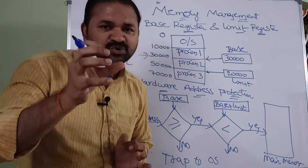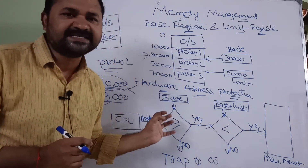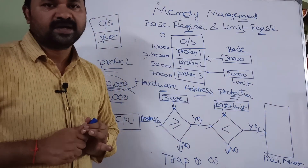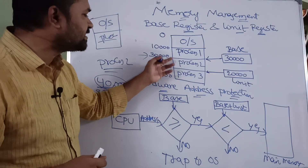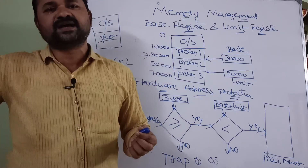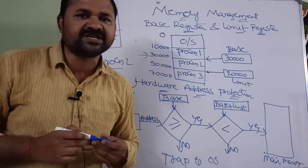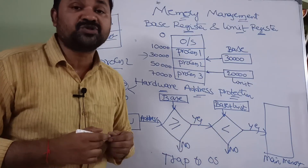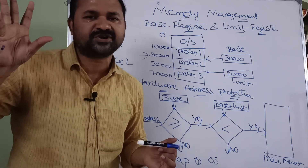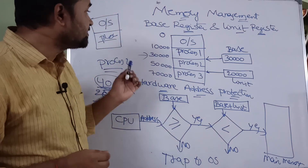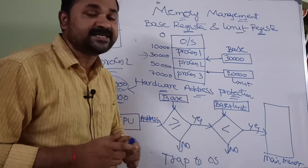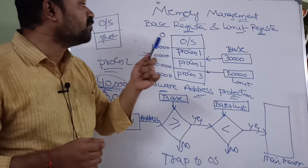Hardware ensures that the CPU is only accessing valid instructions from main memory. If the CPU tries to access an instruction belonging to another process, the hardware sends a trap to the operating system, which immediately stops execution of that process. This is about base register, limit register, and hardware address protection in main memory management.